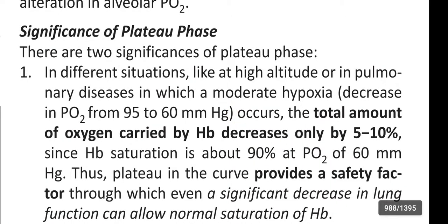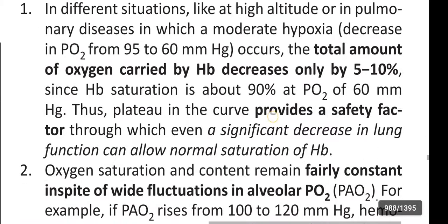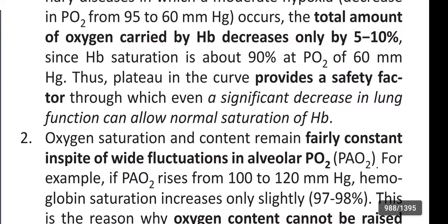Significance of plateau phase: in different situations like at high altitude or in pulmonary diseases, a moderate hypoxia decrease in partial pressure from 95 to 60 mmHg occurs. The total amount of oxygen carried by hemoglobin decreases only by 5 to 10%, since hemoglobin saturation is about 90% at partial pressure of oxygen of 60 mmHg. Thus the plateau provides a safety factor through which even a significant decrease in lung function can allow normal saturation of hemoglobin.